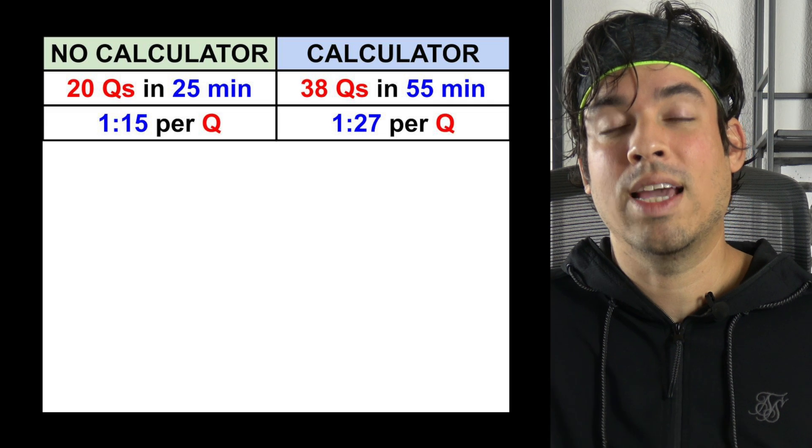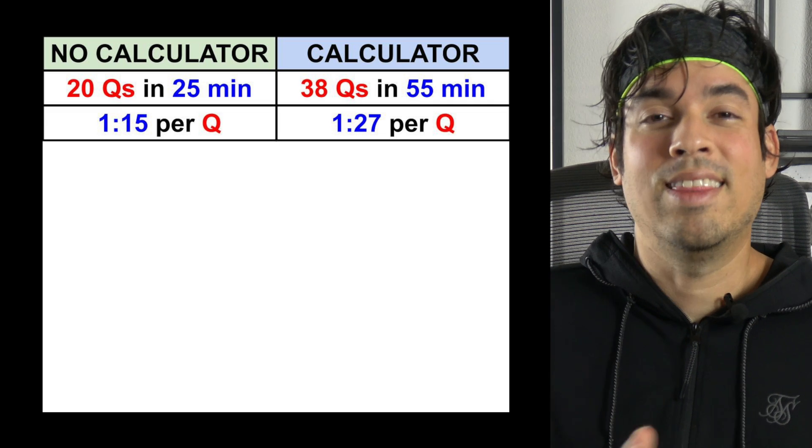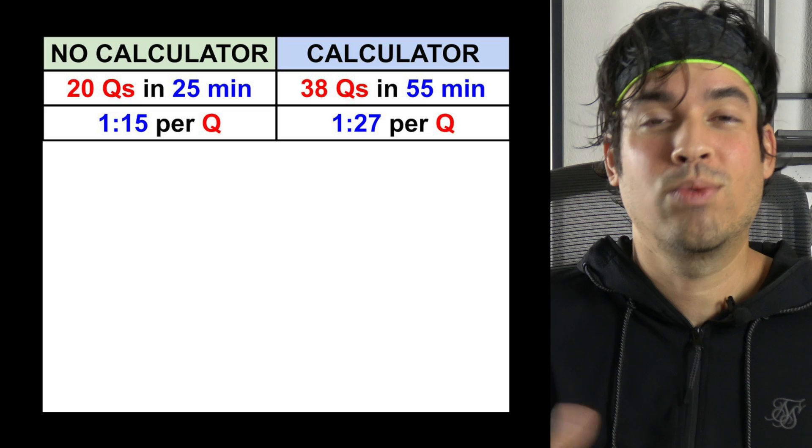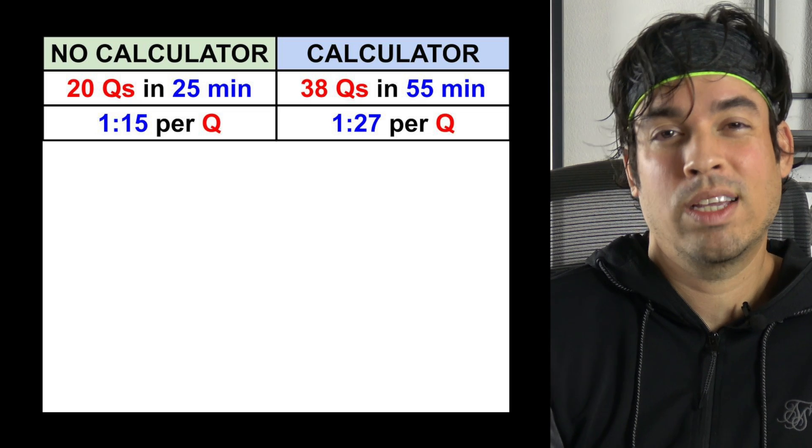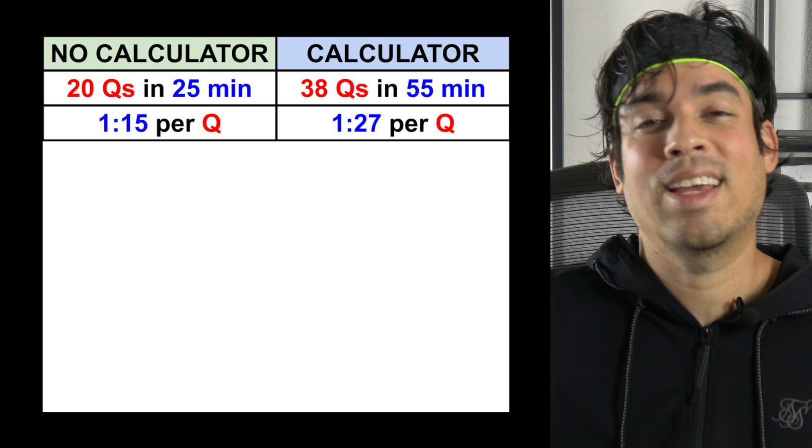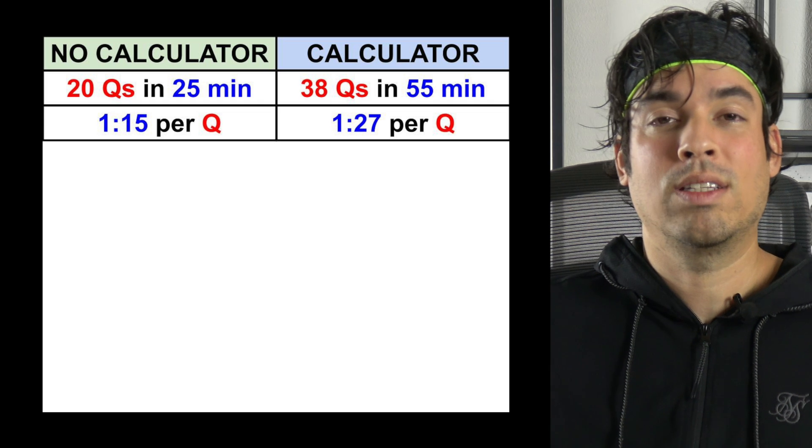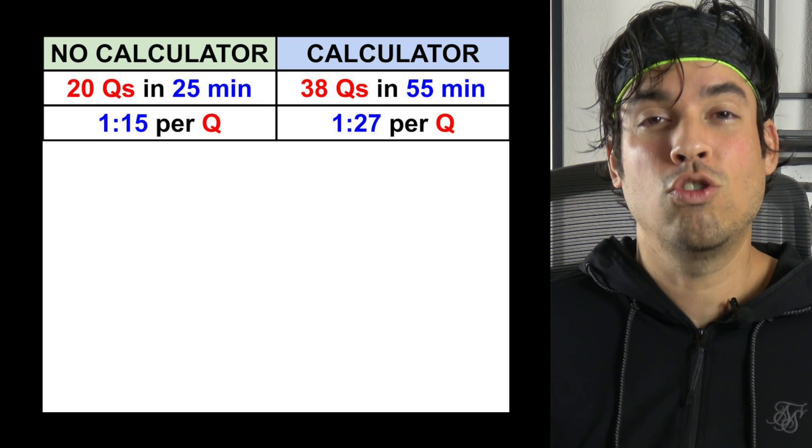So we see that we have a progression of difficulty as we move throughout the multiple choice. Then when we get to the free response we get a reset in difficulty, things get easier again for like the first few questions and then it increases again until we get to the end of the test.